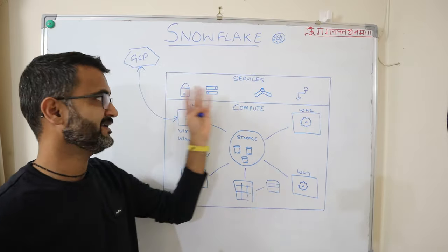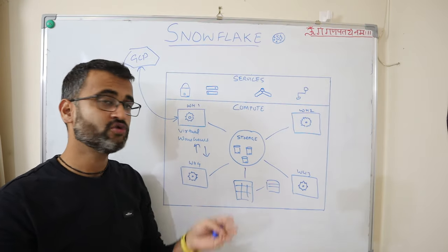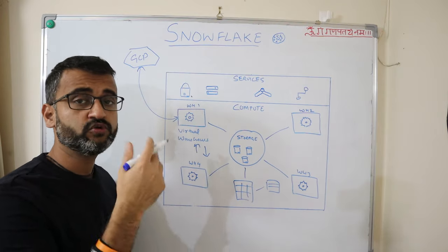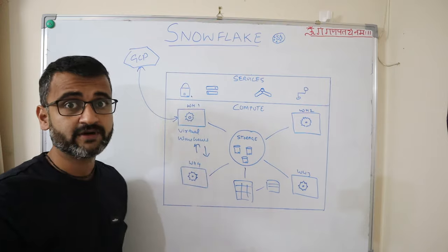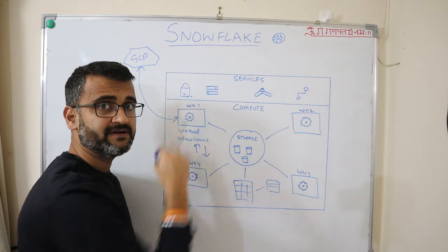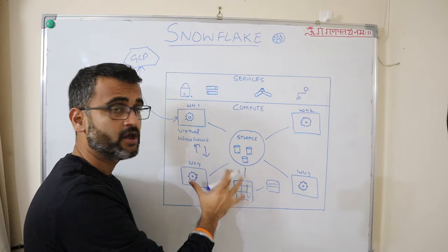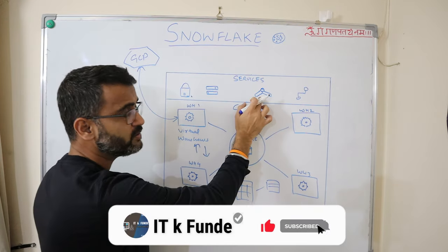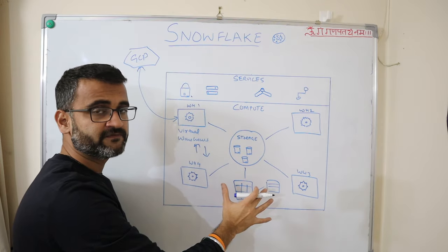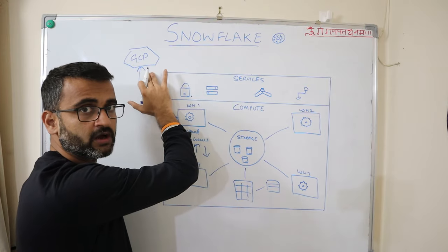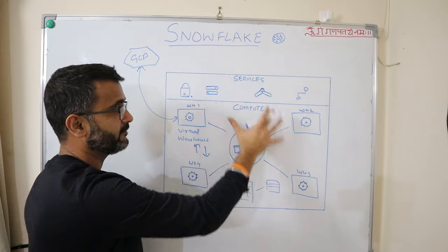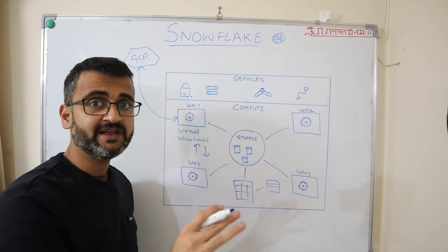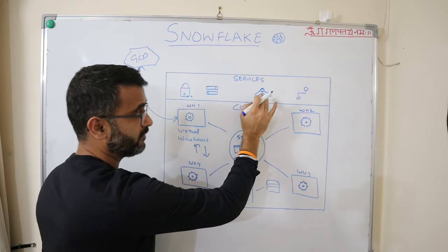On top of the compute layer sits the services layer. Services is your point of entry into this architecture and the main workhorse that manages different operational aspects of Snowflake. The first role is user authentication and session management — ensuring any user logging in is a legitimate user. The second manages these virtual warehouses — data updates and data access happening through them. The third manages overall service, including communicating with cloud resources and managing horizontal scalability and availability across multiple availability zones.